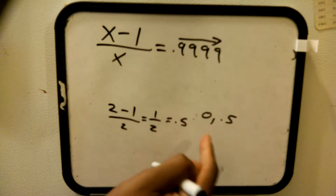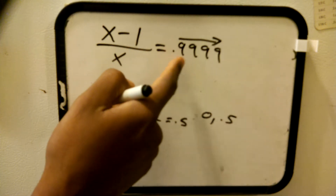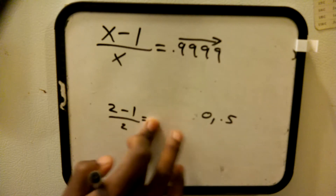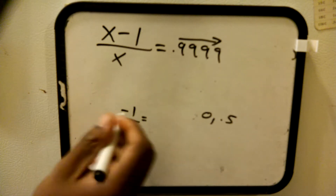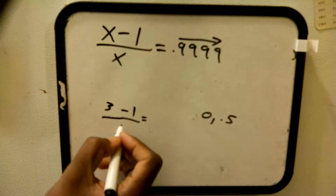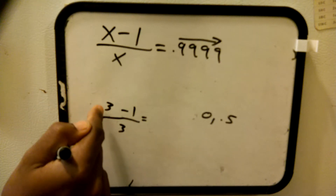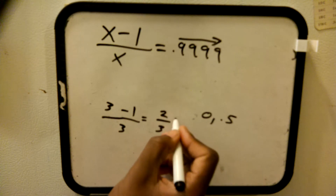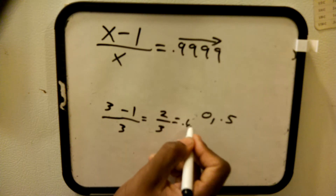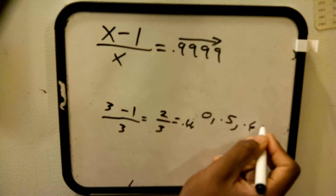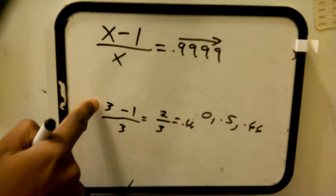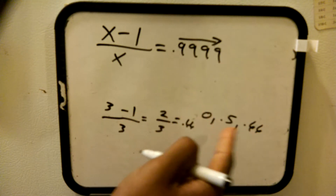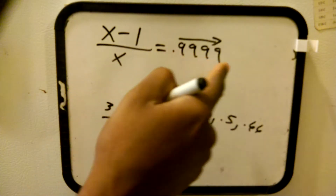As you can see, we're getting higher and closer to 0.999 infinitely. Put a 3 in there for example — put 3 and 3 here. You get 3 minus 1 equals 2, so 2 over 3, which equals 0.66. Do you see that every time you put a higher number for x, you get closer and closer to 0.9999 infinitely?